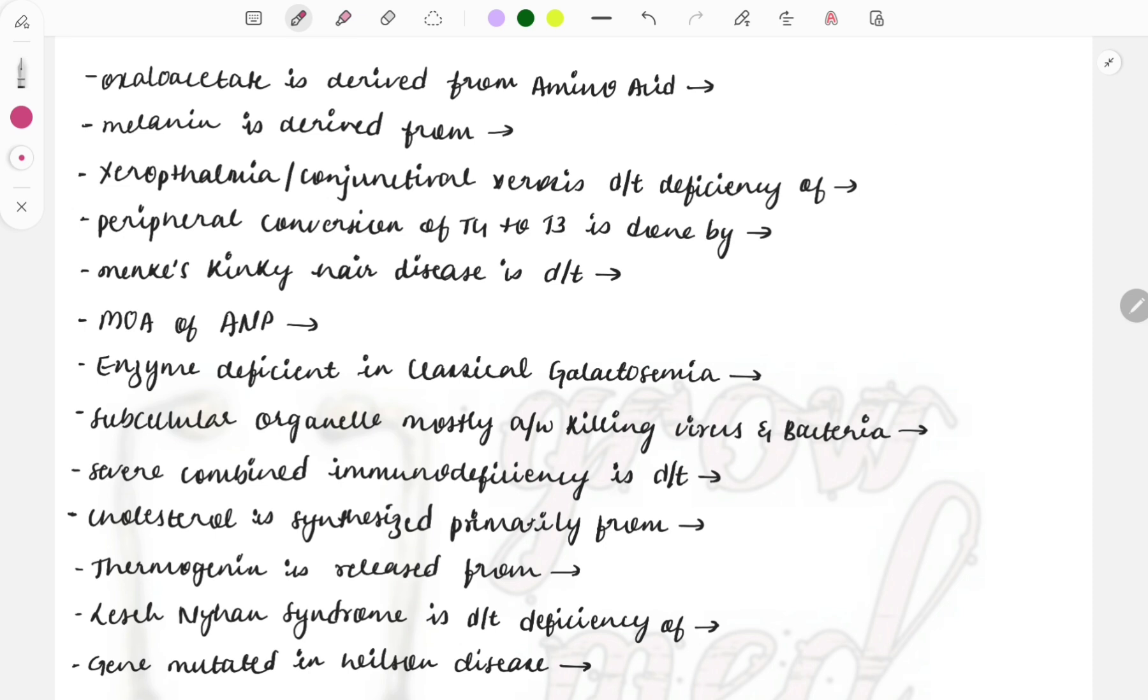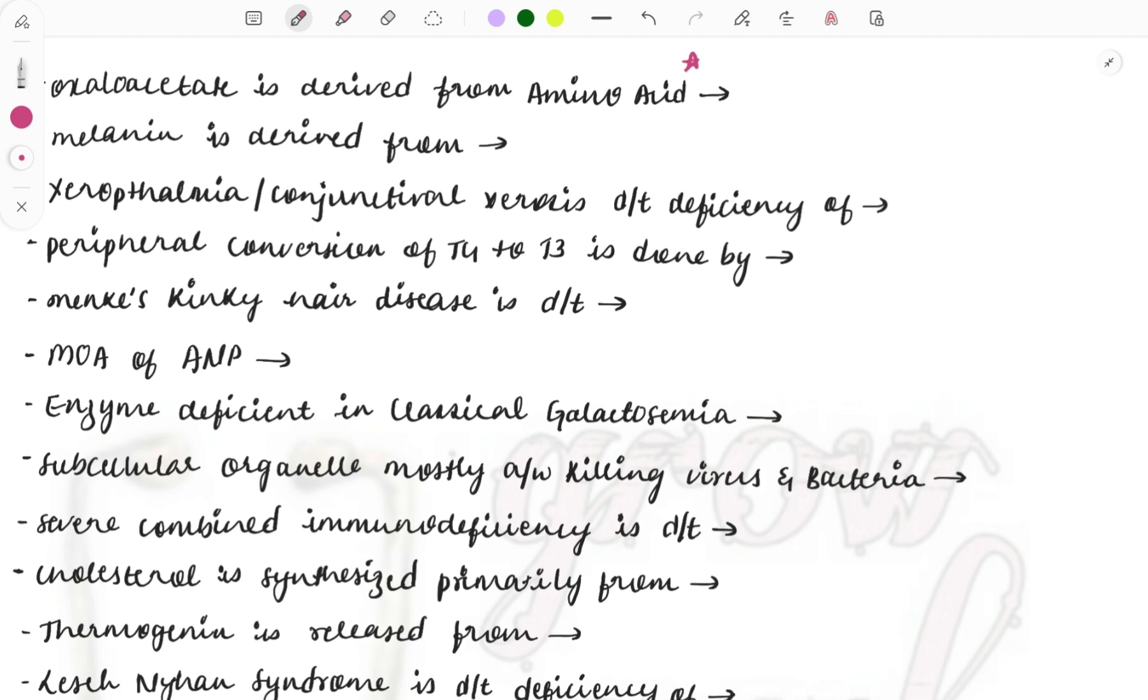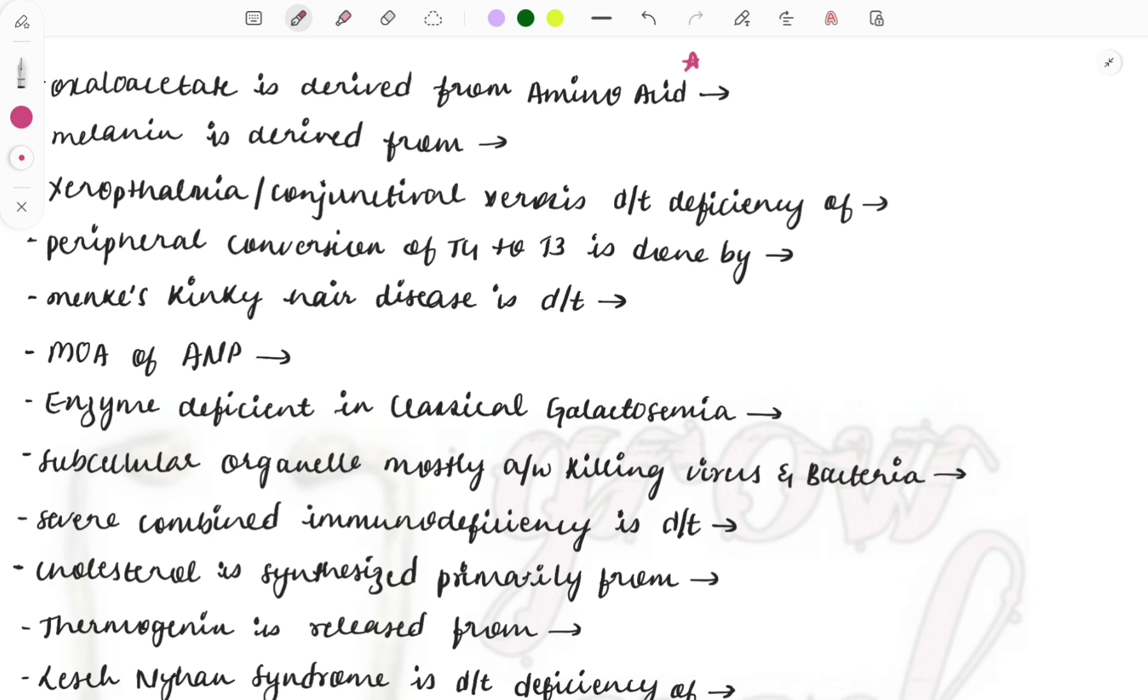Oxaloacetate is derived from which amino acid? The amino acid and its derivatives are a must-do topic. Note it down. Along with discussing the one-liners, I'll also be discussing which topics are important and if any other questions are asked in relation with that, we'll discuss those also. So oxaloacetate is derived from aspartate.